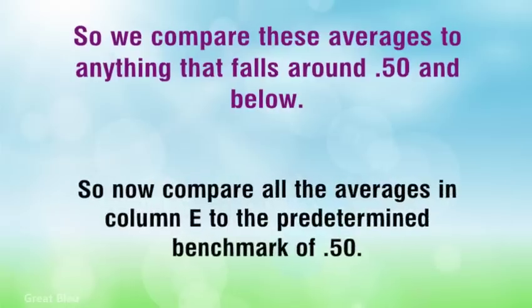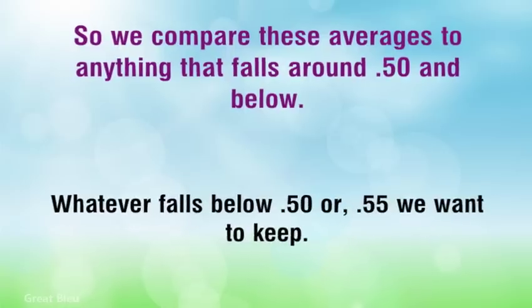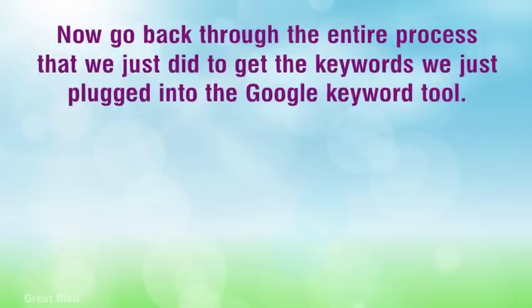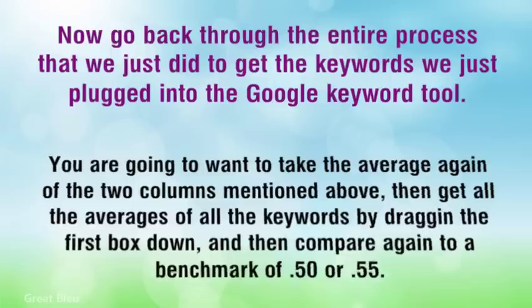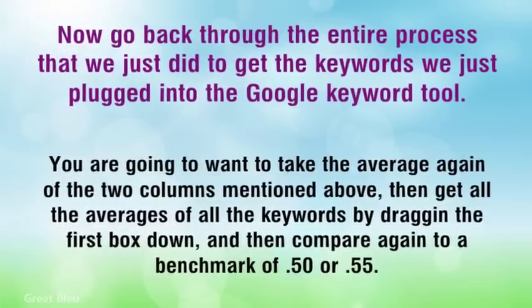Now compare all the averages in column E to the predetermined benchmark of .50. Whatever falls below .50 or .55 we want to keep. Then go back through the entire process we just did to get the keyword we plugged into the Google Keyword Tool. Take the average again of the two columns, get all the averages by dragging the first box down, and compare again to a benchmark of .50 or .55.